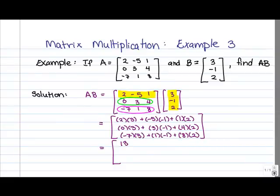In entry 2, 1, we've got 0 minus 3 plus 8, so that's 5. And finally, in entry 3, 1, we've got negative 21 minus 1 plus 16, so that's minus 6.